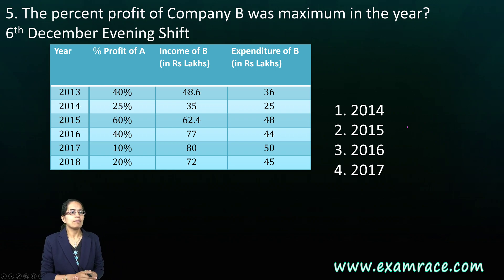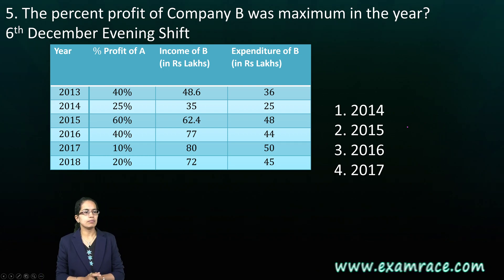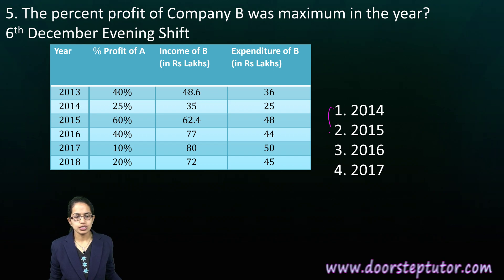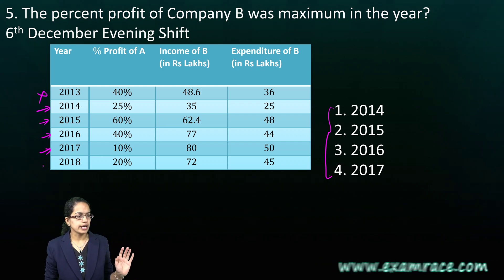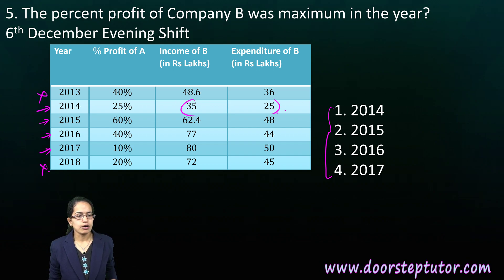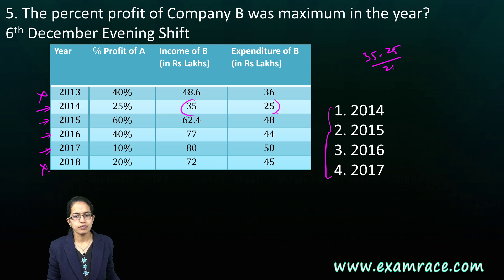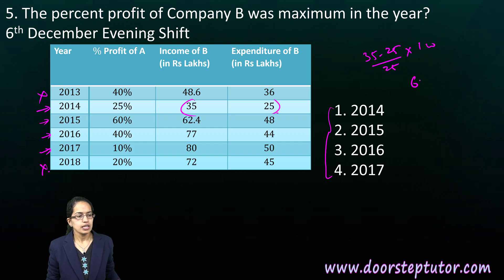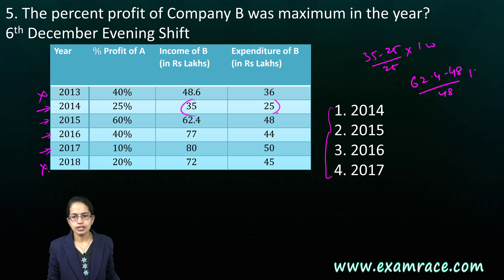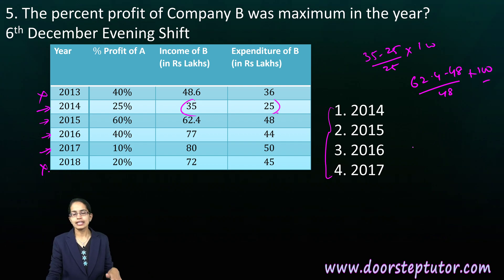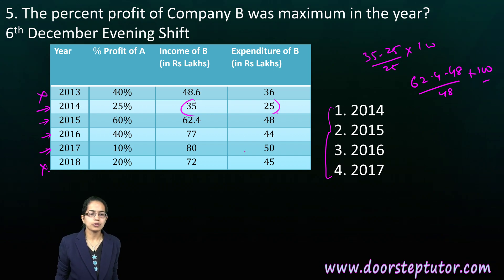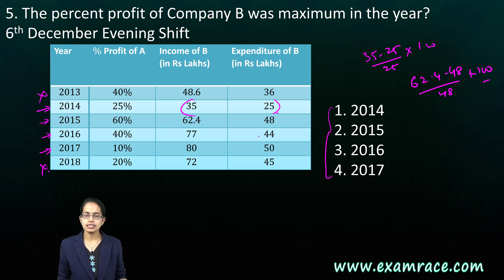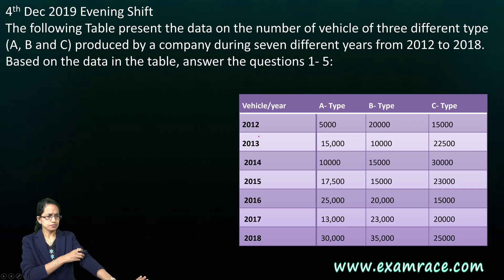The next question: in which year was the percentage profit of company B maximum? We consider only the years 2014, 2015, 2016, and 2017, leaving out 2013 and 2018. We find the profit percentage for each: for example, (35 minus 25) divided by 25 into 100, and (62.4 minus 48) divided by 48 into 100, and so on for all four years. The year with the highest percentage is the right answer — a very direct question based on the table.